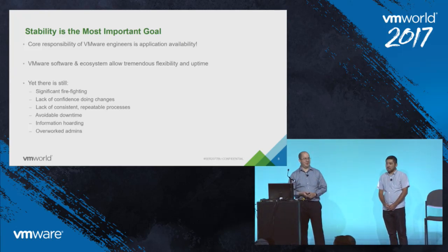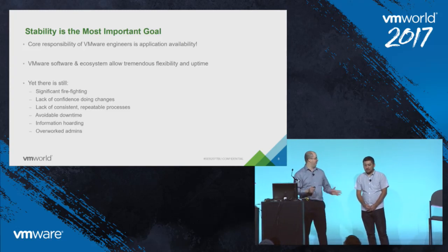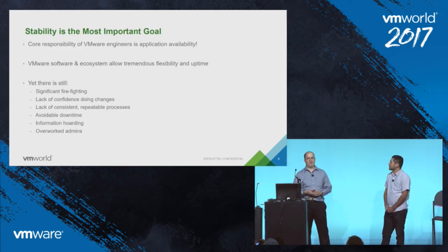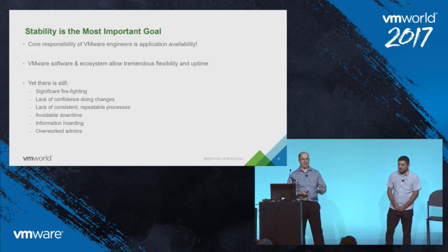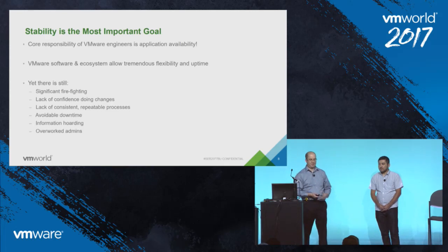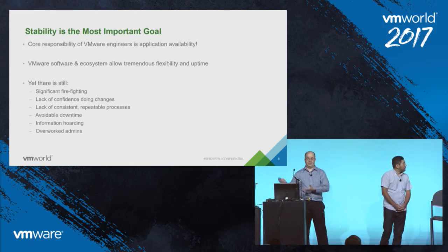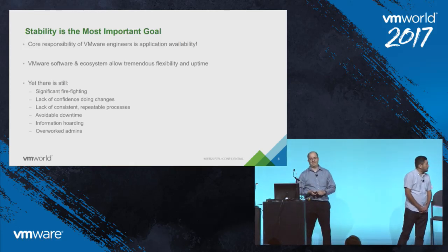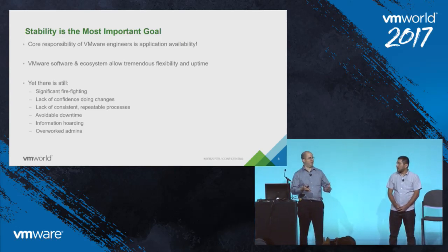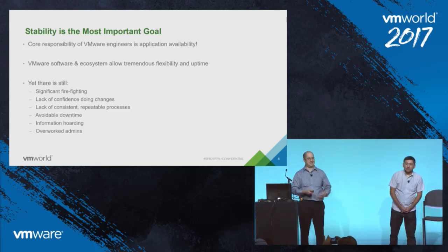Everybody here knows that stability is the most important goal. If you don't have availability, you don't really worry about performance. That's our core responsibility as VMware engineers — we have to provide uptime. VMware has been tremendous in giving us software choices that improve stability and uptime. Yet we still find a lot of administrators having trouble: firefighting, lack of confidence when doing changes and upgrades, and the situation where one person is the expert and hoards information — a very vicious cycle.